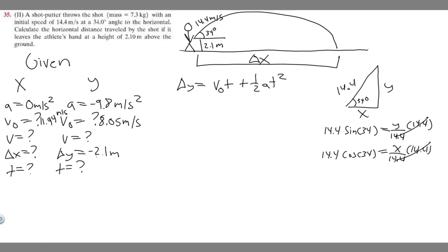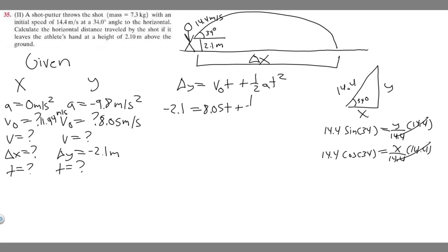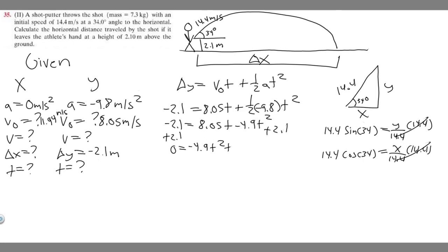Now we have everything we need to solve for time in the y direction. Looking at the x side, we don't have enough variables to solve for anything yet, but for y we do. Plugging in delta y as minus 2.1, v sub 0 as 8.05 times t, plus one half times minus 9.8 times t squared: one half times minus 9.8 gives minus 4.9 t squared. Adding 2.1 to the other side puts it in quadratic form: 0 equals minus 4.9 t squared plus 8.05t plus 2.1. We're solving for t.